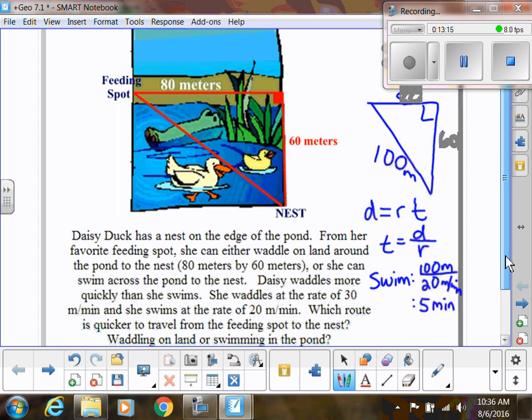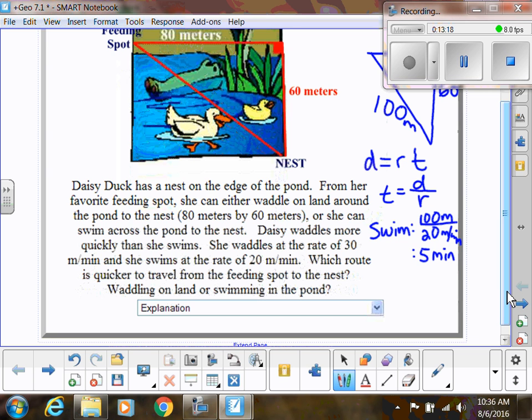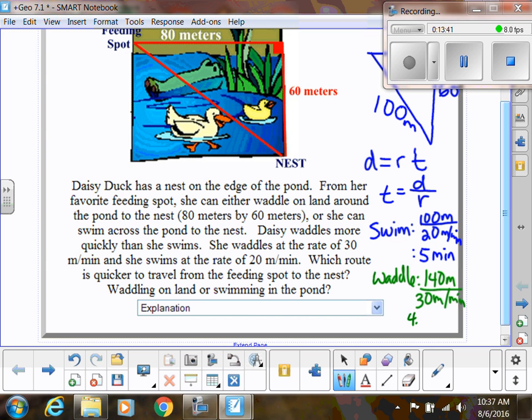Let's do the same thing now if she waddles. Now, she's waddling, she's doing the distance is 80 plus 60. So 80 plus 60 is 140. So for waddling, her distance is 140 meters, but she's going a lot faster at 30 meters per minute. So 140 divided by 30, that's going to be 4.6 repeating, which is less time than five minutes, right? Not by much, but just a little bit. So if this were a problem on a test or like a ACT problem, you would say it's better to waddle. And if this were a test for me, you would show me all your work and explain why waddling would be better.